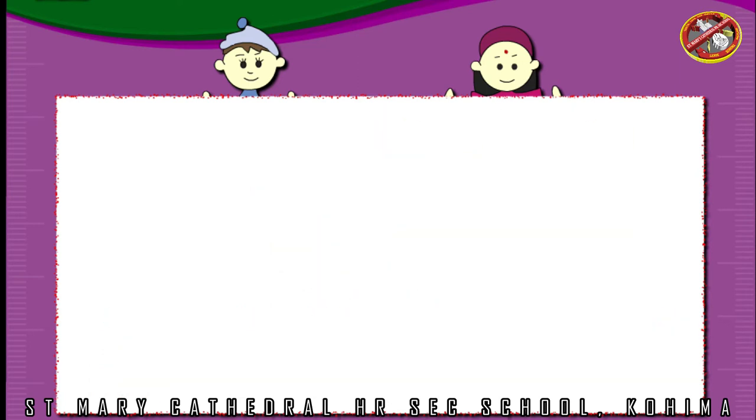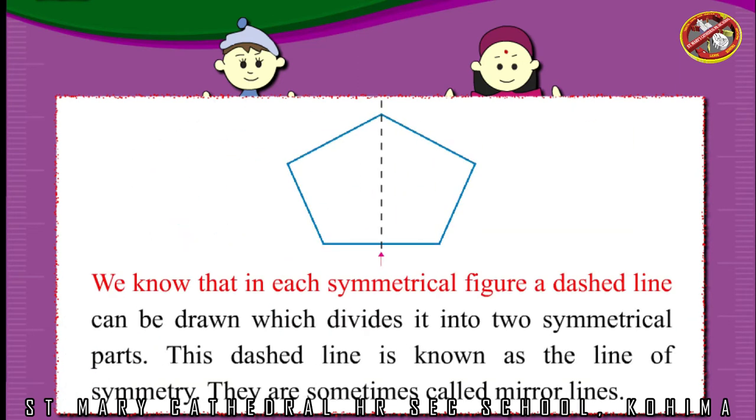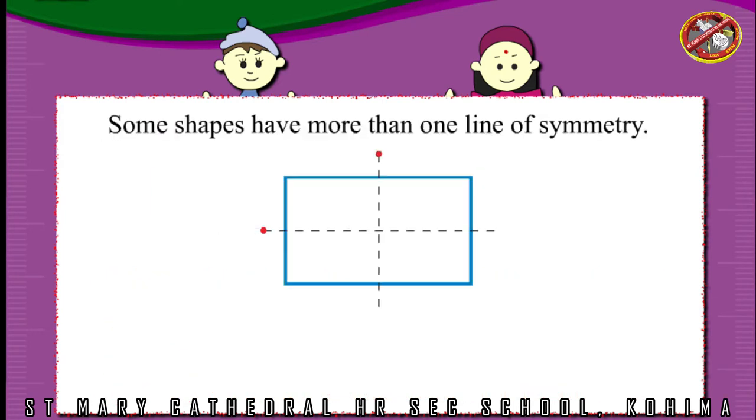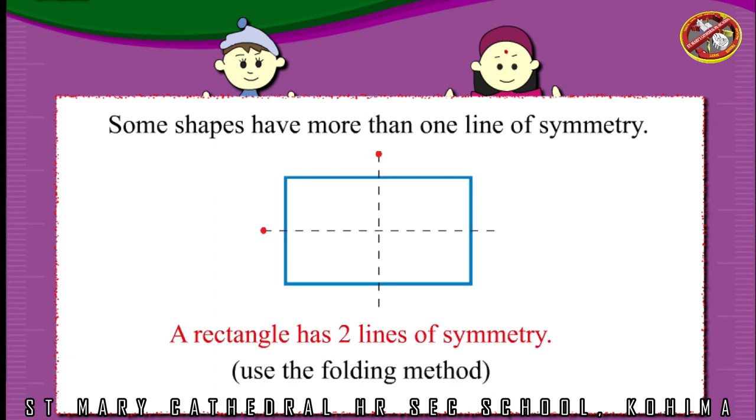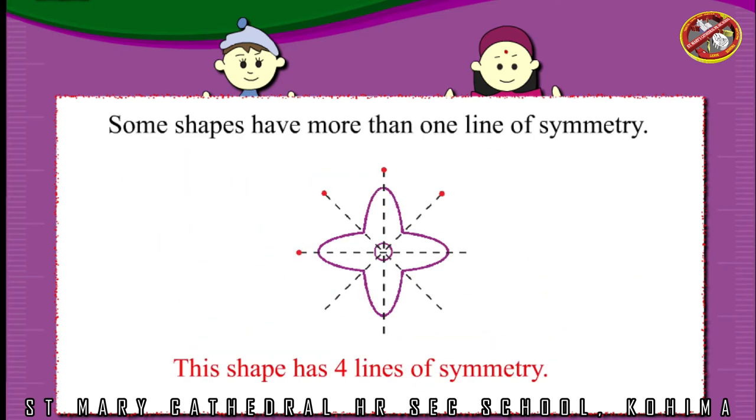Lines of symmetry. We know that in each symmetrical figure a dashed line can be drawn which divides it into two symmetrical parts. This dashed line is known as the line of symmetry. They are sometimes called mirror lines. Some shapes have more than one line of symmetry. A rectangle has two lines of symmetry. Use the folding method. This shape has four lines of symmetry.